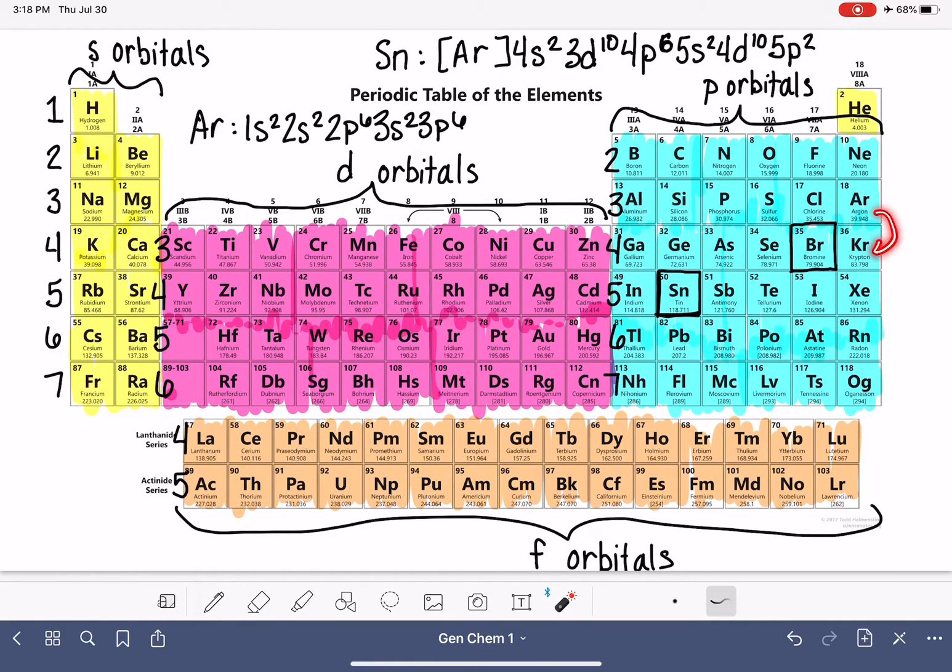So what's happening with our next noble gas down the road, our next noble gas in line there is krypton. And krypton's electron configuration after argon goes 4s², 3d¹⁰, 4p⁶. 4s², 3d¹⁰, 4p⁶.